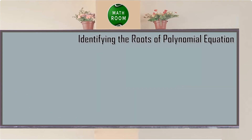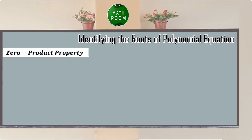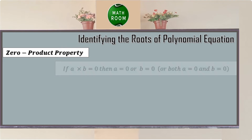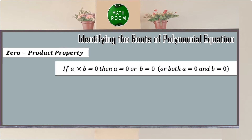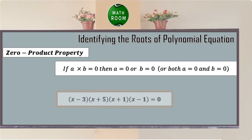It is easy to find the roots of a polynomial equation when it is expressed as a product of linear factors using the zero product property. The zero product property states that if a times b equals 0, then a equals 0, or b equals 0, or both equal 0. This can help us solve the roots of: (x minus 3)(x plus 5)(x plus 1)(x minus 1) equals 0.